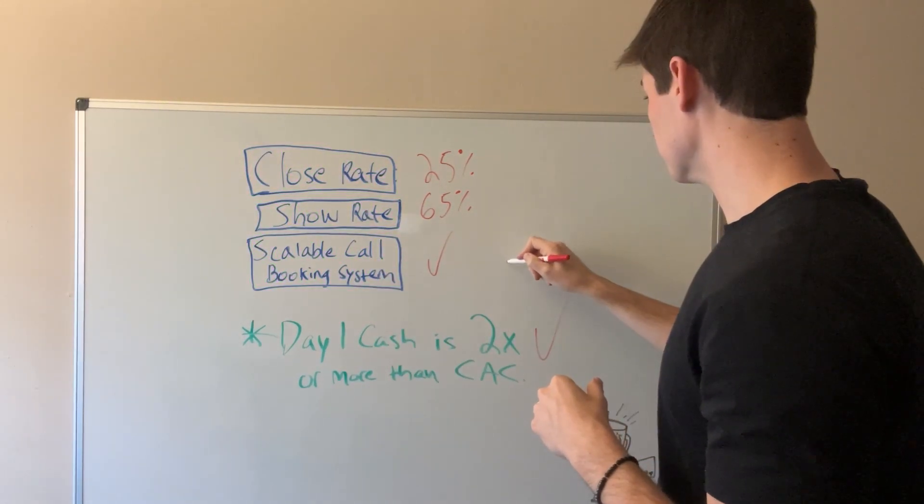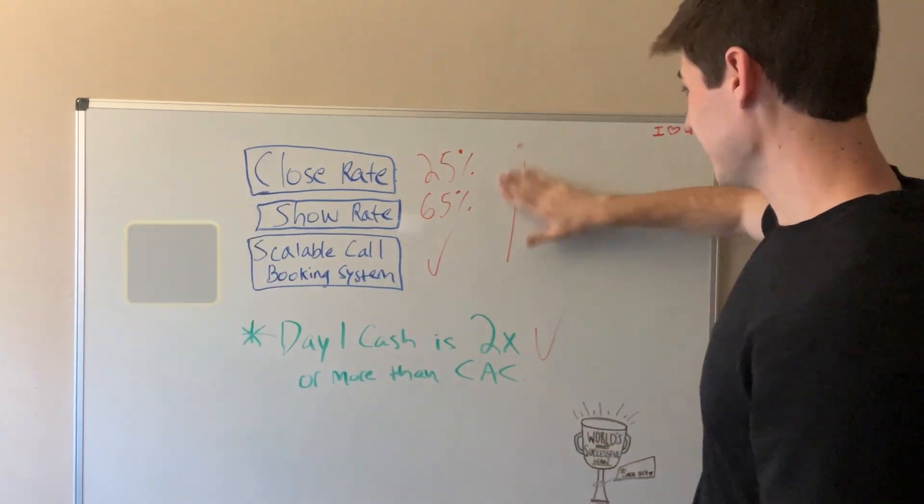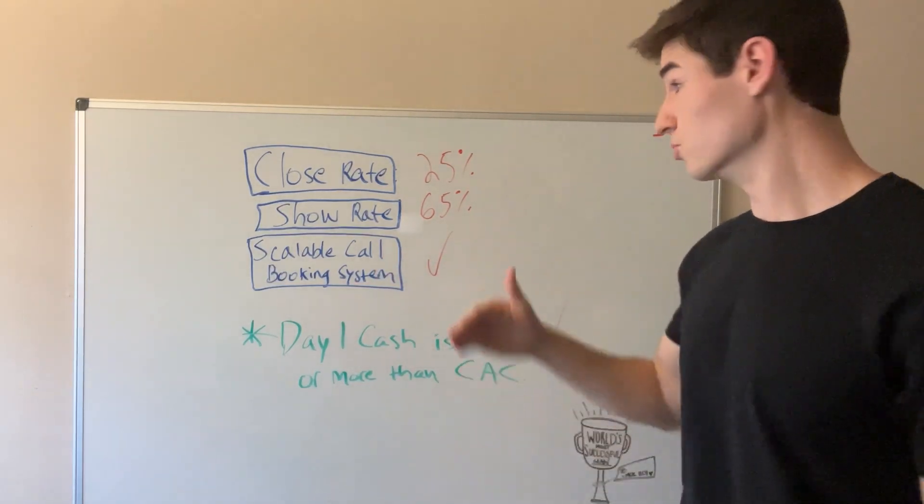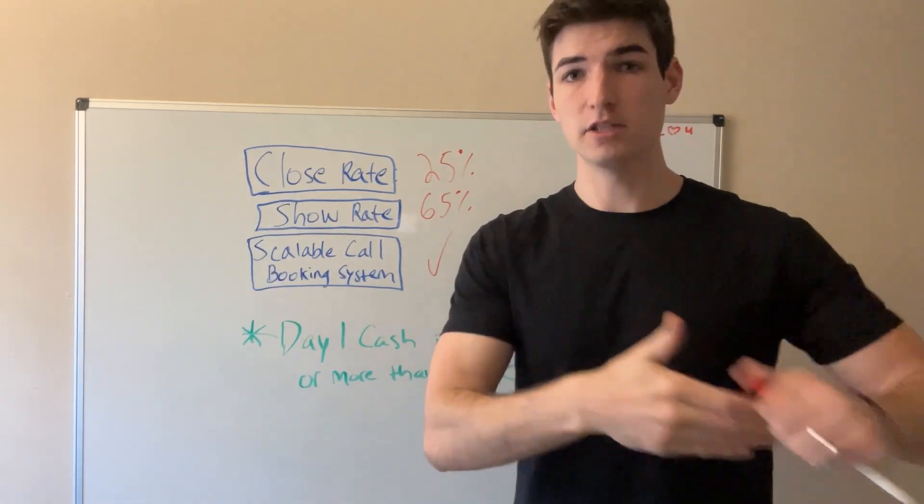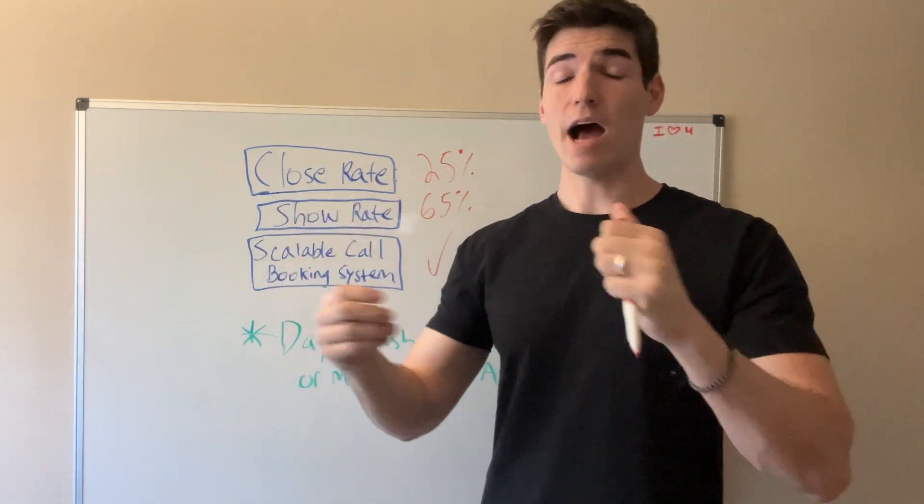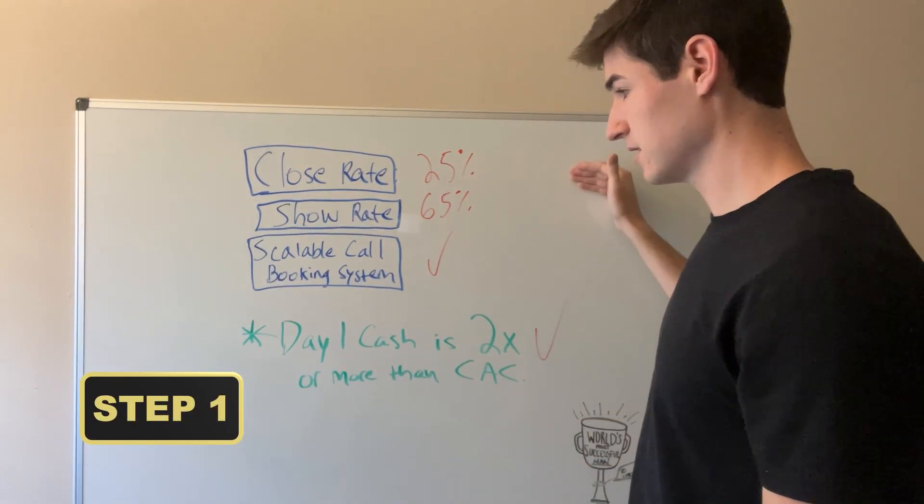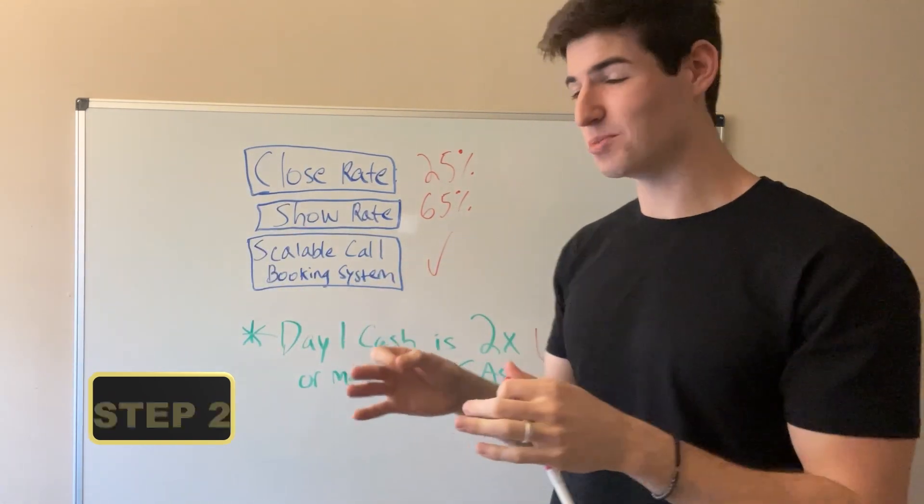Step two is you do more volume. You simply do more inputs. That is where the scalable call booking system really comes in handy. You need to be able to say, we're spending X amount on ads, let's just double that, let's triple that. Obviously you don't want to do that overnight, but that's how simple you want it to be. Step one, finding these conditions and getting them in your business. Step two is scaling. You simply do more volume. That is it. That is all there is to scale your business.